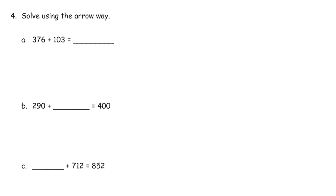Solve using the arrow way. So here we've got 376. And it says here, using the arrow way. So you have to show the arrow way. And we're going to add 103 plus 100, 476. And then we can add the three. We could add one at a time. But we can add all three. 479.